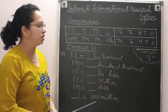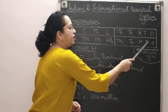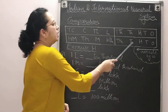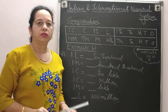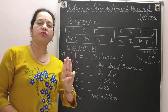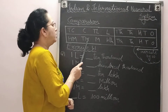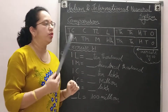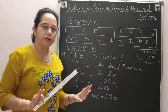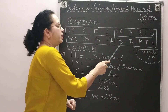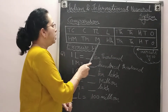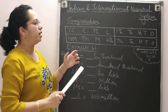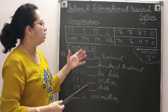Now the international number system. Reading it the same way: ones, tens, hundreds — pause — thousands, ten thousands, hundred thousands — pause — millions, ten millions, hundred millions. In the international system, every comma comes after three digits. This is your international number system.